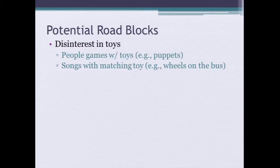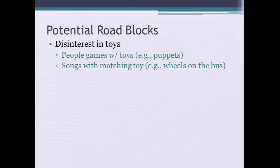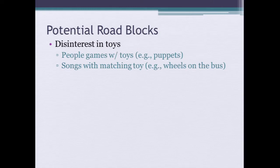Another roadblock is just the disinterest in toys. For most of the kids that we see with autism, they are going to be beyond infancy — so they're going to be probably the youngest two, three, four. Children at that age that are neurotypical are interested in toys; children play with toys. So that's why this intervention really focuses on play with people and play with toys.